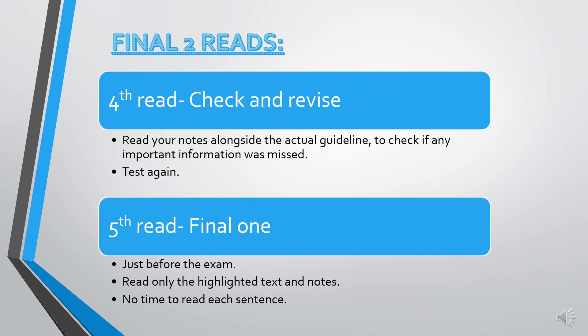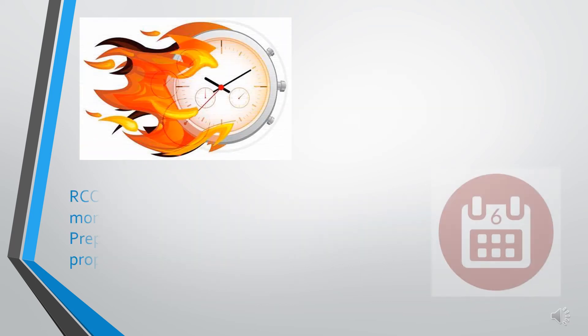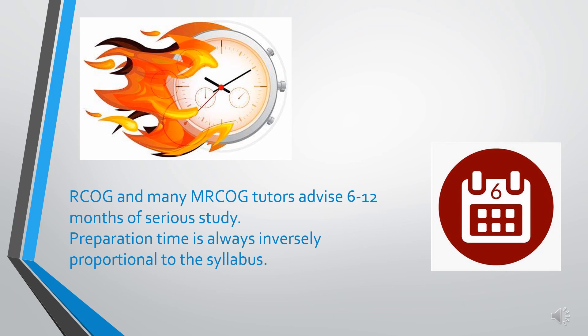Your fifth and final read should be just before the exam. Read only the highlighted text and your notes — there's no time to read each sentence. This does seem time consuming, but trust me, you need a good six months to prepare well and clear on the first attempt. RCOG and many RCOG tutors advise six to twelve months of serious study. As we all know, preparation time is always inversely proportional to the syllabus.